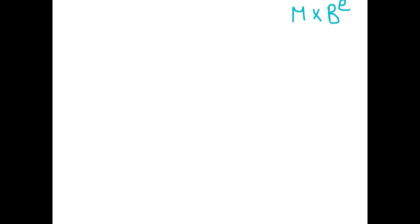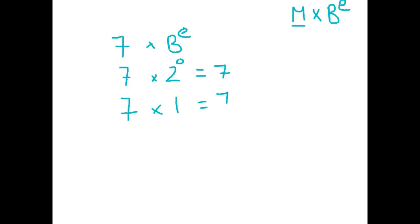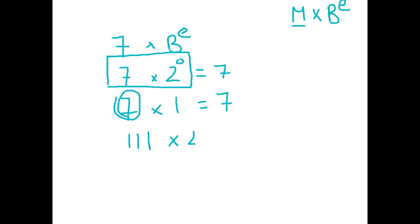Our formula is m times b to the e. Let's say we start with the number 7 — that is our m — and we need that times b to the e. We're converting to binary so our base is 2, and 2 to what power can we multiply 7 by to still equal 7? 2 to the 0 equals 1, so 7 times 1 still equals 7. Now we convert 7 to binary, which is 111, and we're still times 2 to the 0.